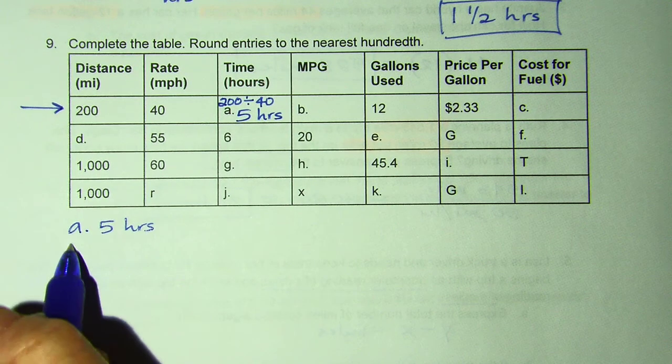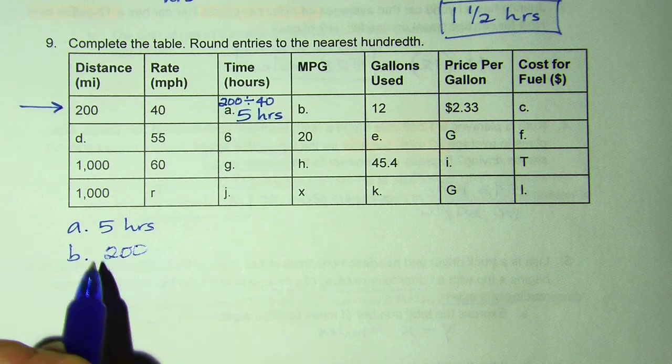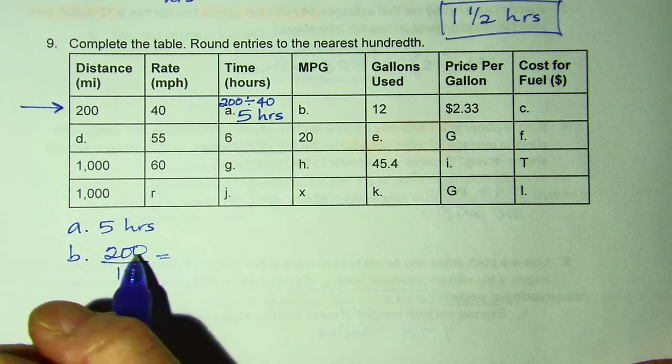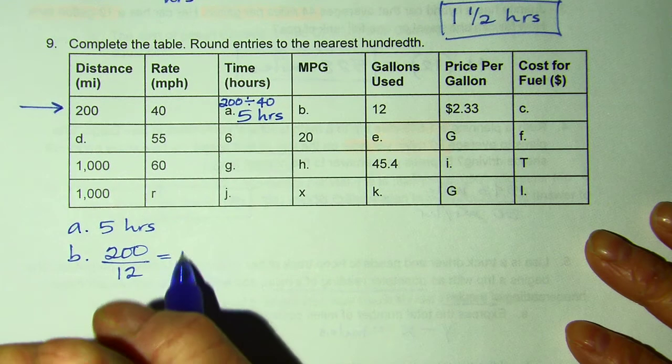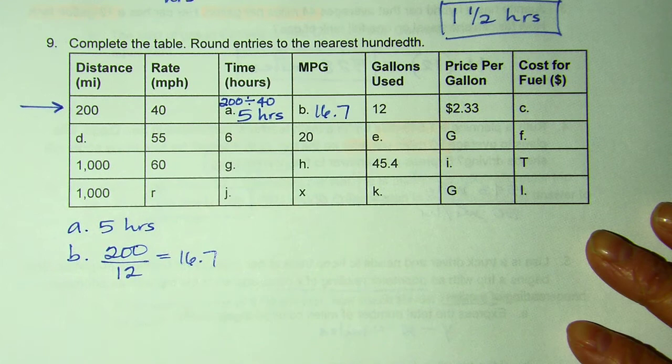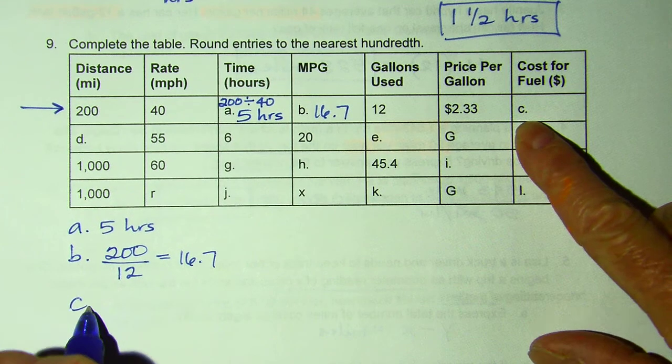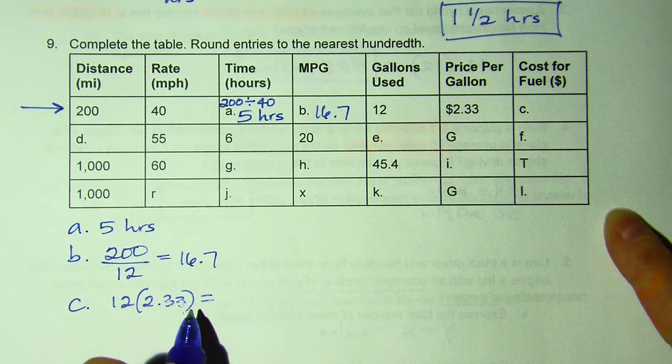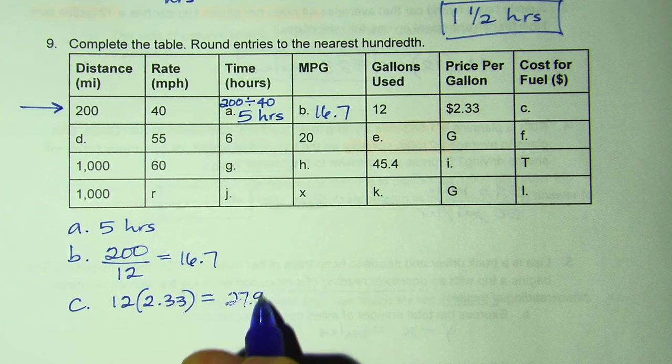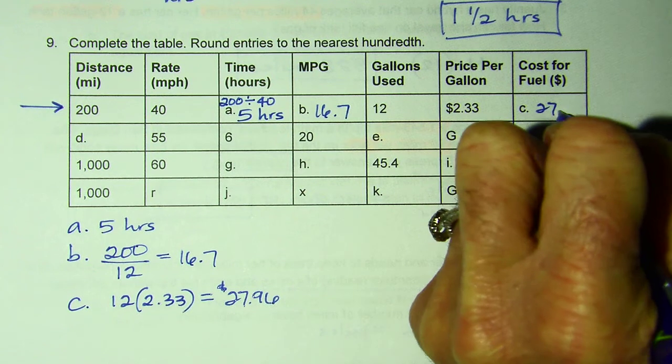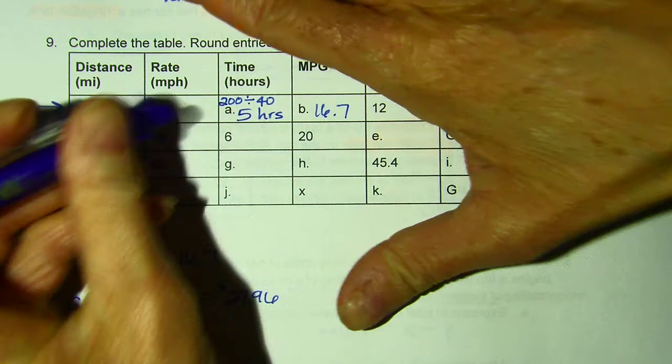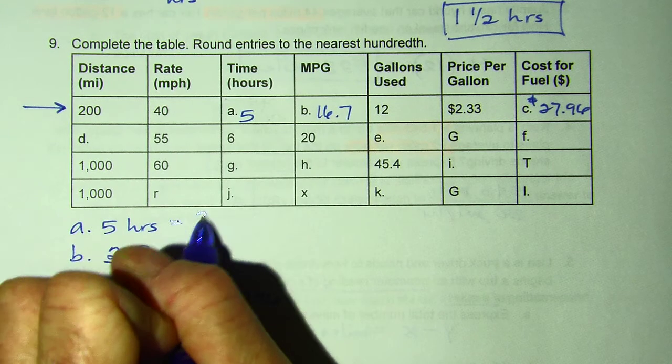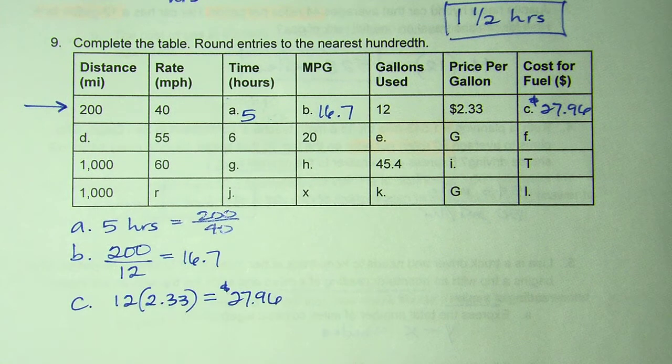Part B, miles per gallon. So miles per gallons, so per 12. So I'm going to divide the total miles, divided by my gallons used, and I get 16.7. And then C, cost, so 12 gallons times what I paid for, and that gives me 27.96. Five hours. I got that from dividing 200 by 40.